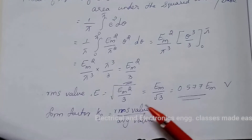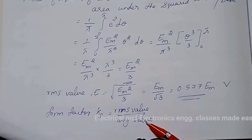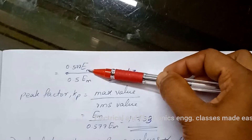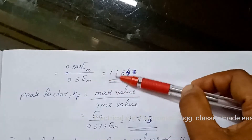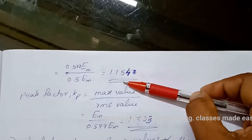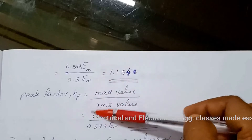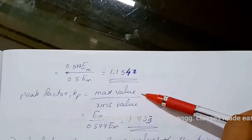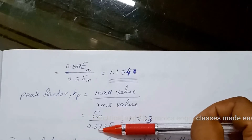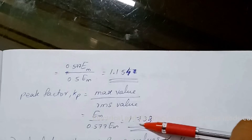Form factor Kf equals RMS value divided by average value, that is 0.577 em divided by 0.5 em, which equals 1.154. Peak factor Kp equals maximum value divided by RMS value, that is em divided by 0.577 em, and we get 1.733.